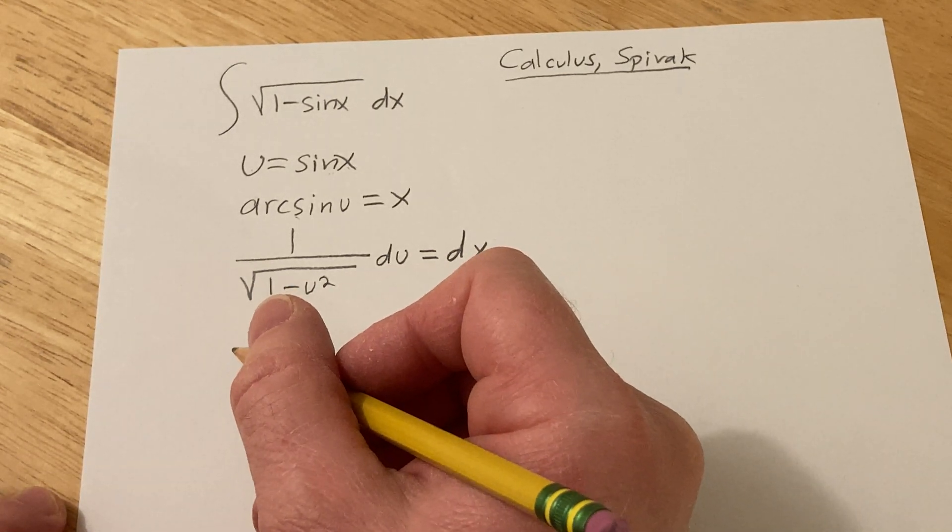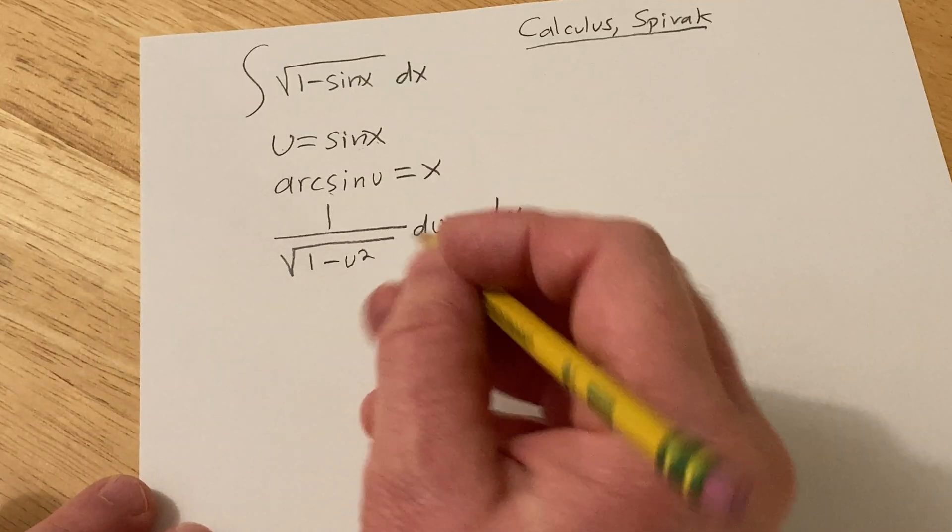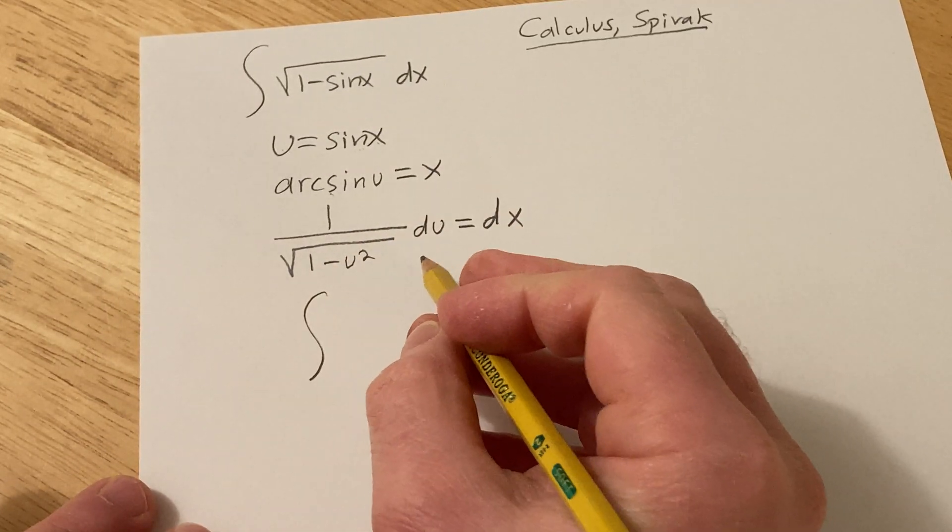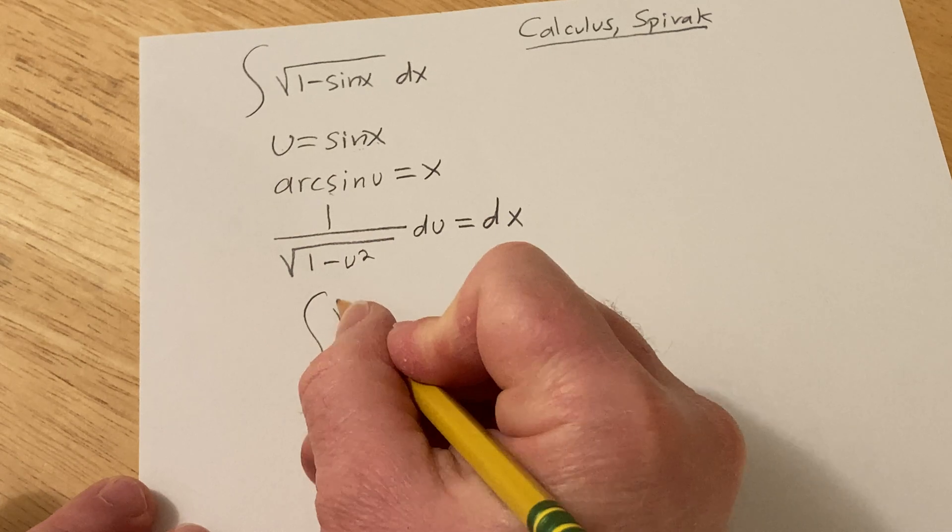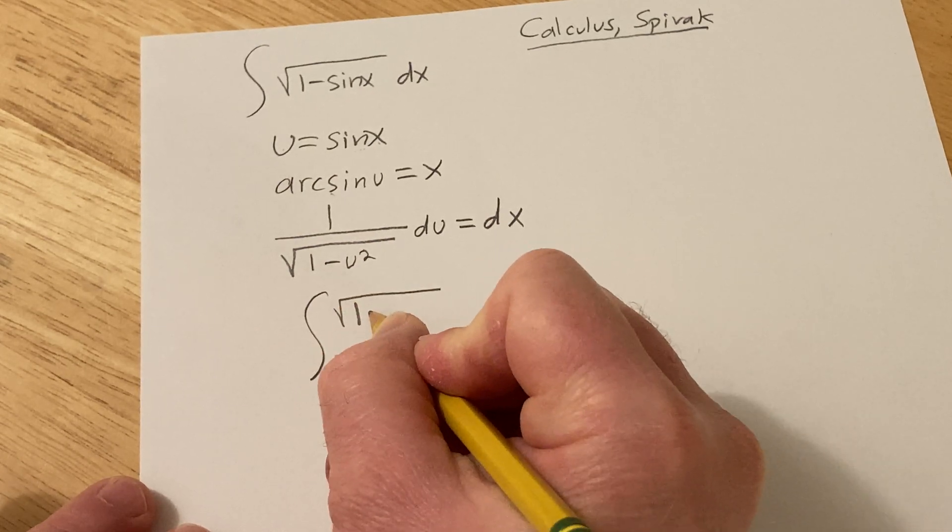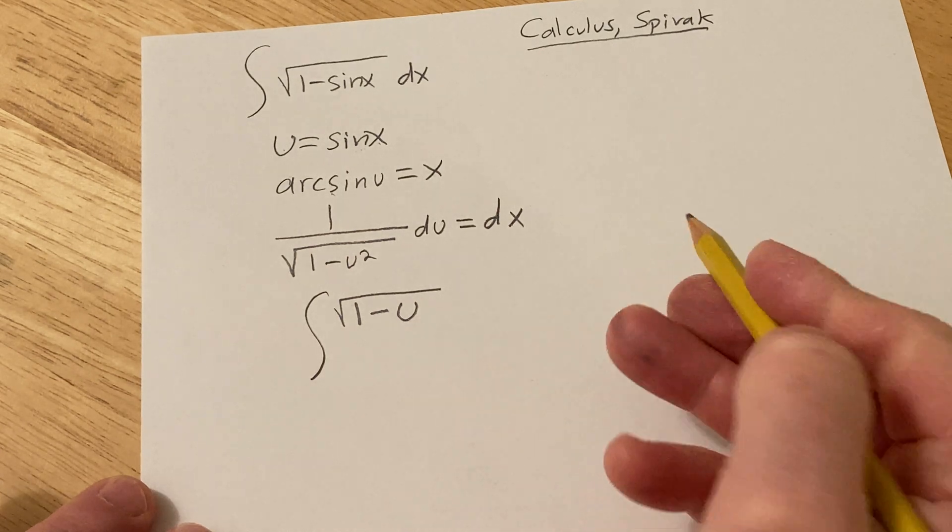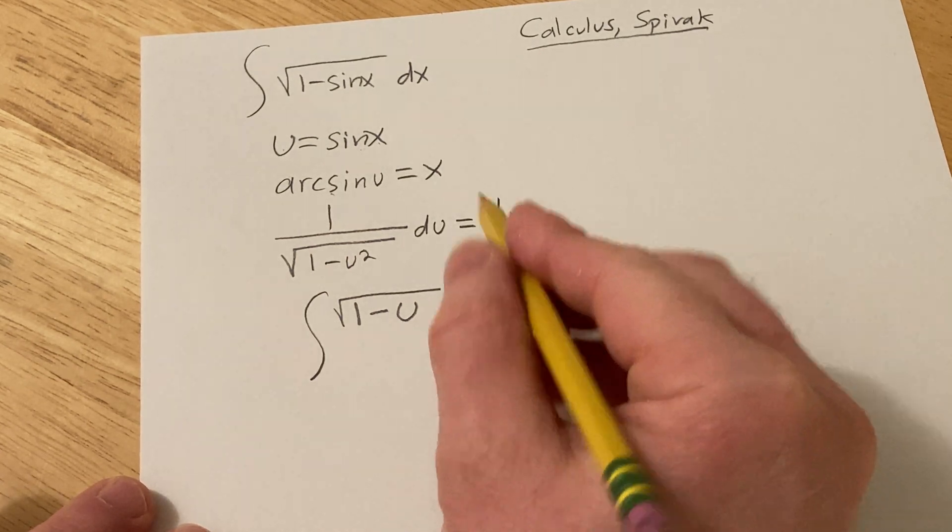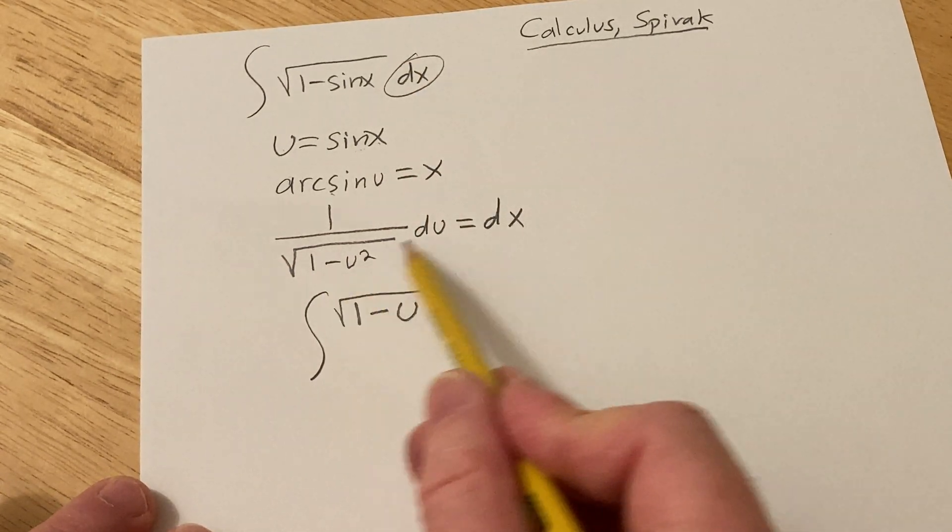So now, let's go ahead and try to make the substitution, see what happens. So this is the integral of square root 1 minus u, right, that's the sign. And then the dx is all of this stuff,